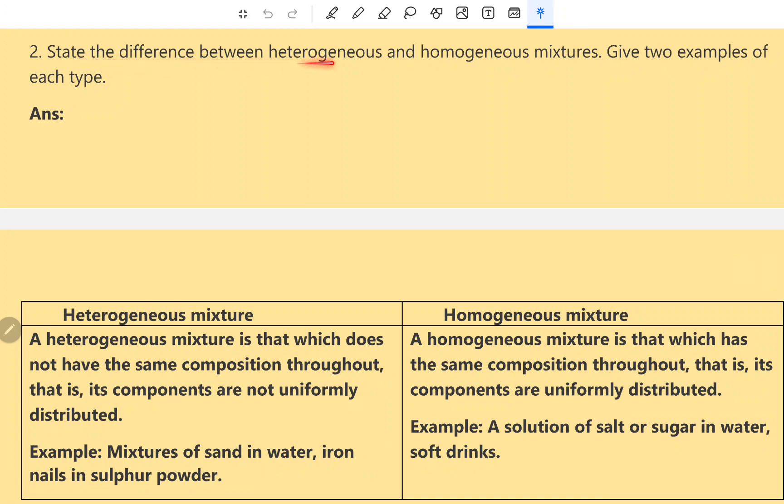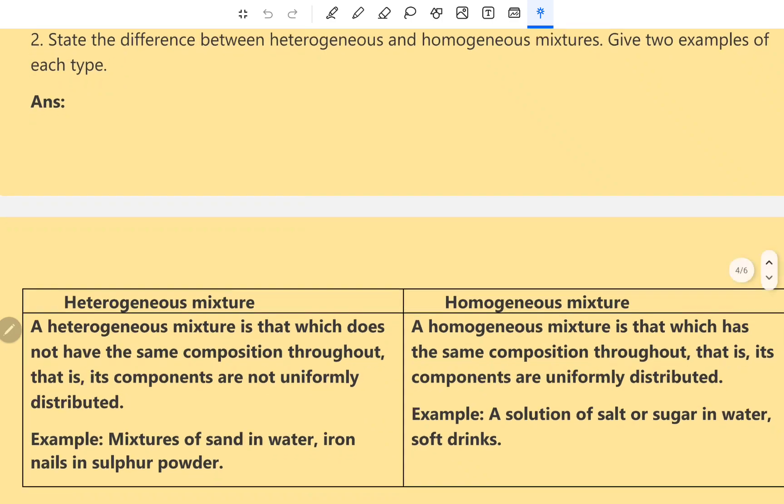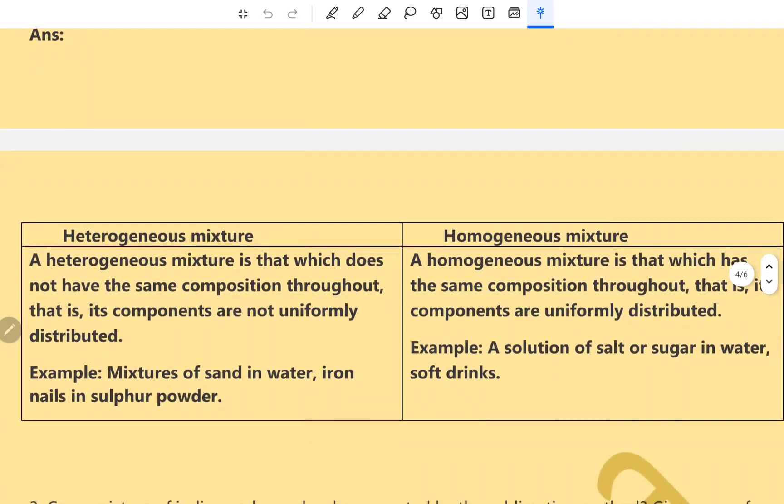State the difference between heterogeneous and homogeneous mixture. Give two examples of each type. A heterogeneous mixture is that which does not have the same composition throughout. That is, its components are not uniformly distributed. For example, mixture of sand in water, iron and sulfur powder, etc. A homogeneous mixture is that which has the same composition throughout. That is, its components are uniformly distributed. For example, a solution of salt or sugar in water or a soft drink.